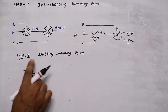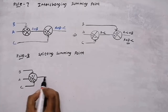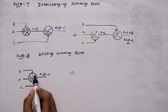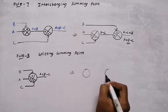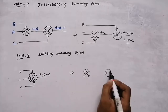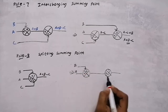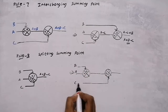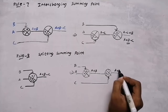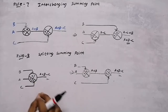In rule number eight, we split the summing point. A single summing point with inputs A (plus), B (plus), and C (minus) gives output A+B−C. This single summing point can be split into two: the first adds A and B giving A+B, the second subtracts C giving A+B−C. Same output. A single summing point can be split into two summing points.